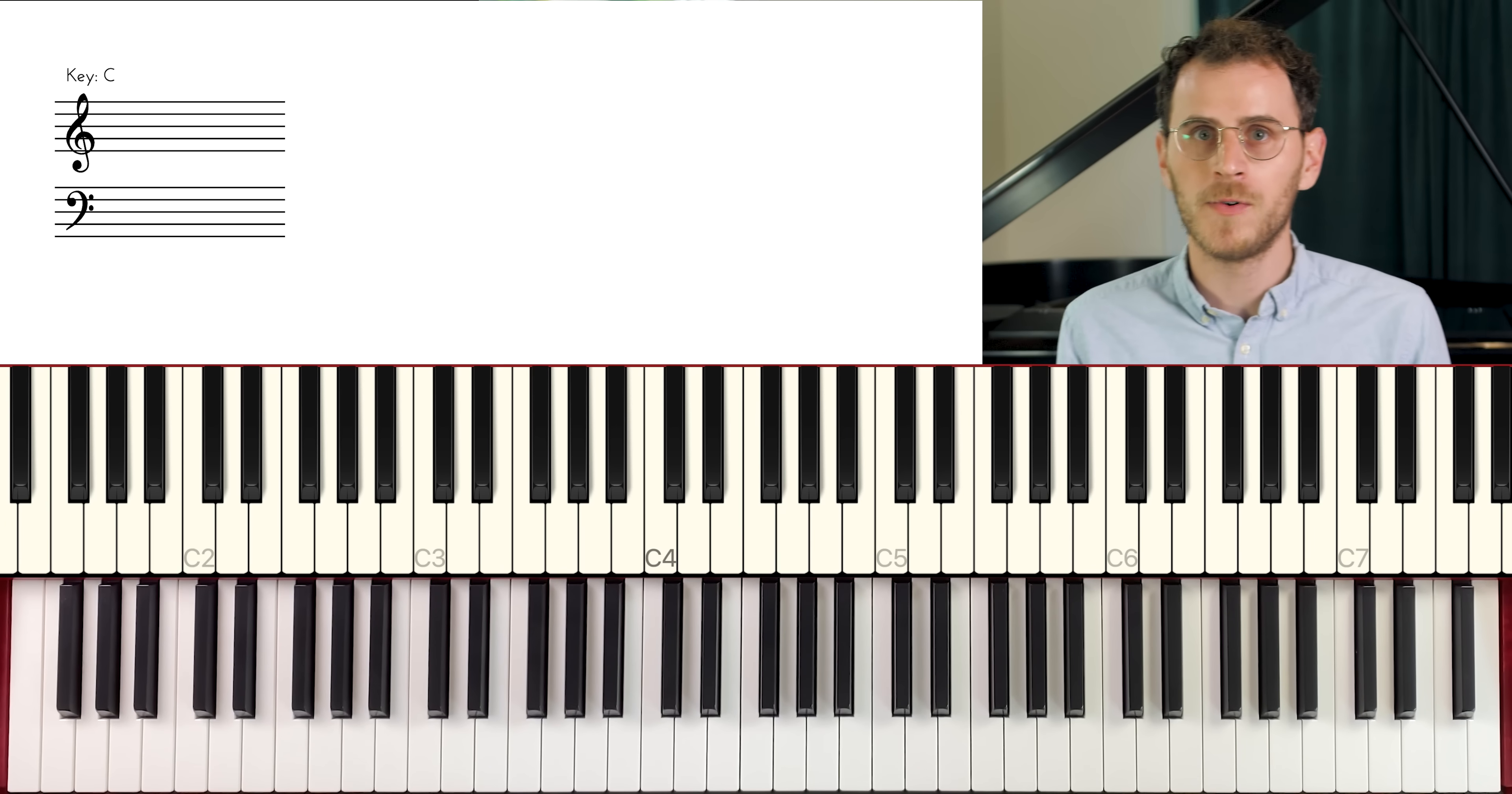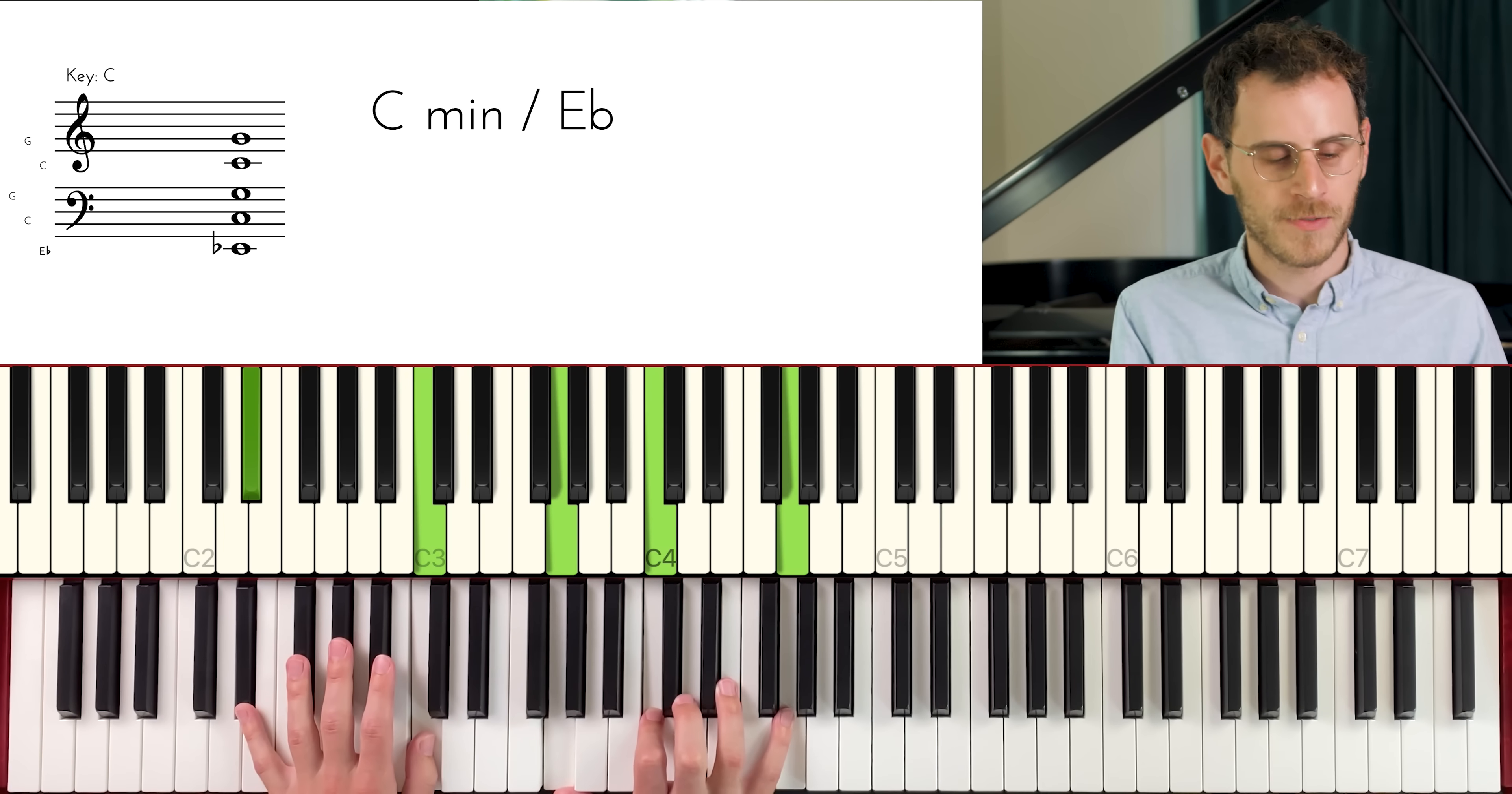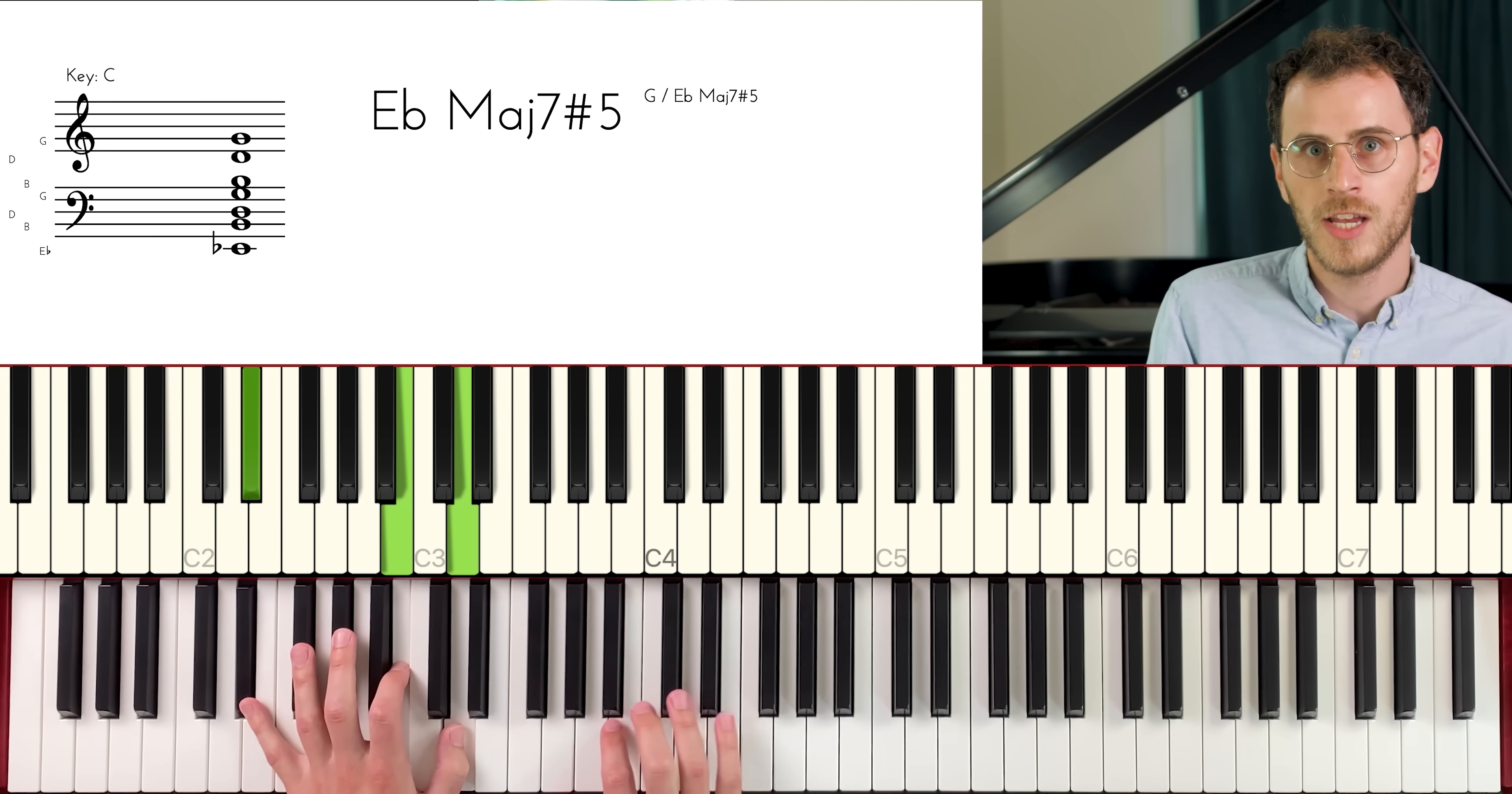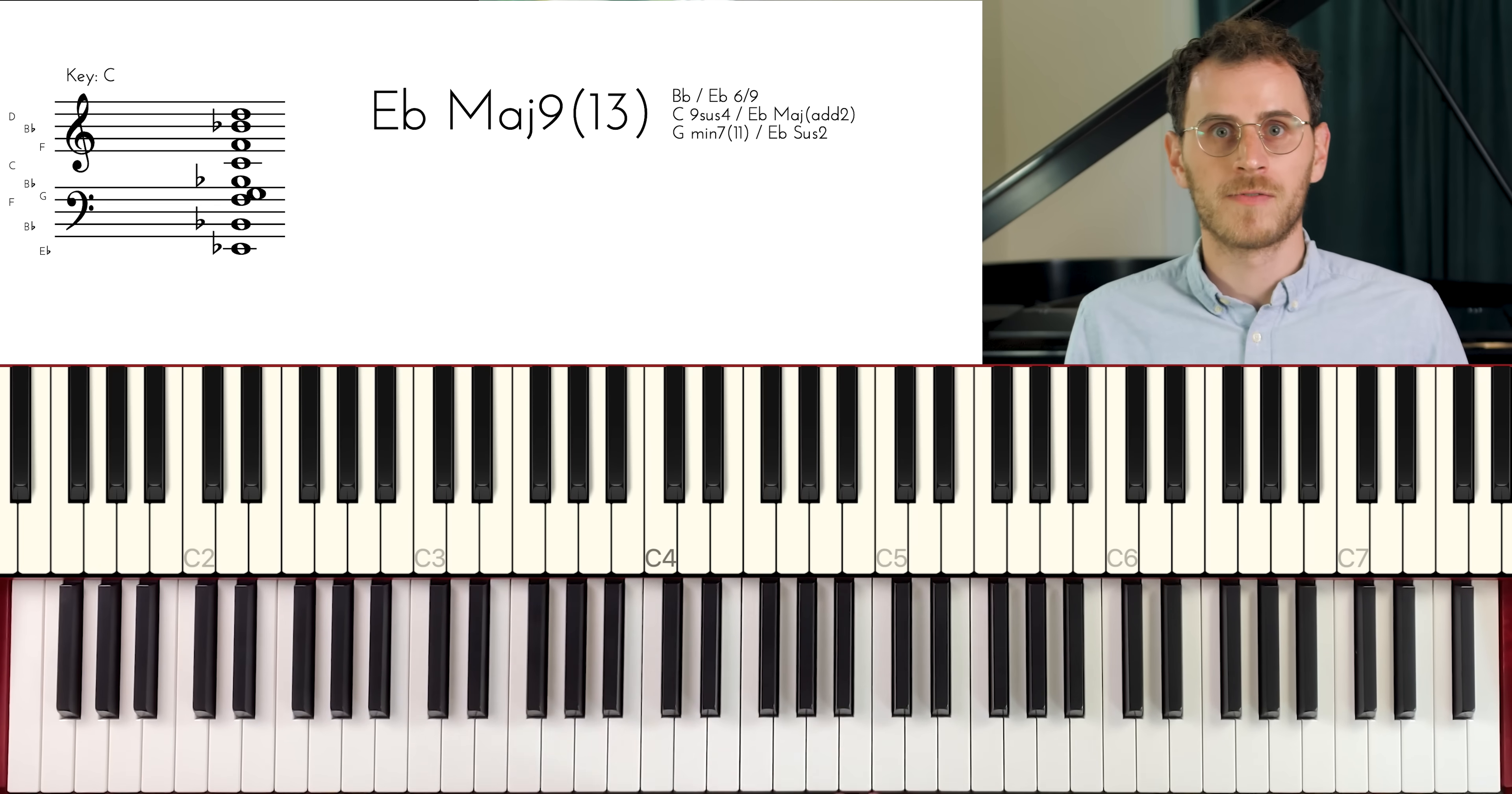But the real point here is by adding in these little half step movements, it gives us more places to go and we can start to build some more inner motion. You might have heard me do a really nice little inner motion classic jazz piano cliche here. I love this one. What we're doing is we're going to a sharp 5. It's almost like we're playing G over E-flat.